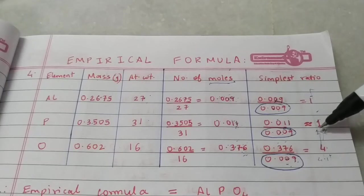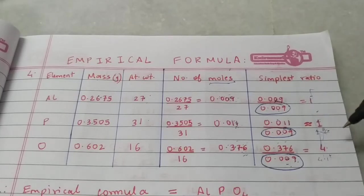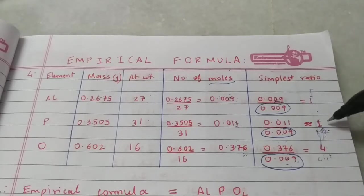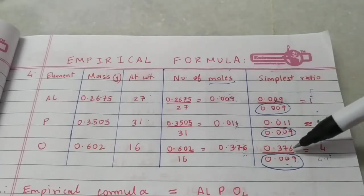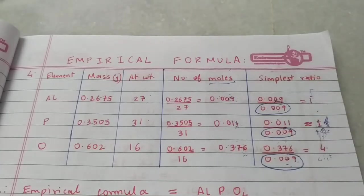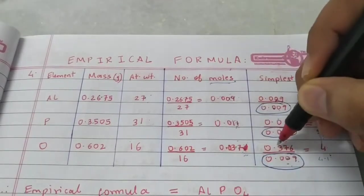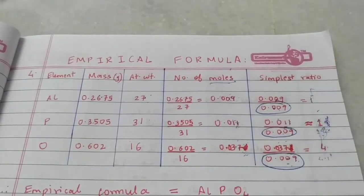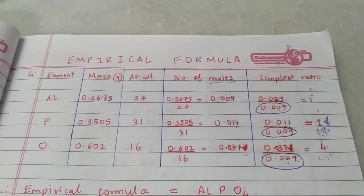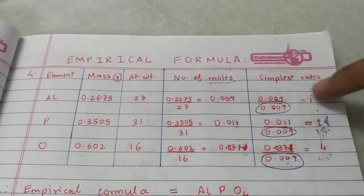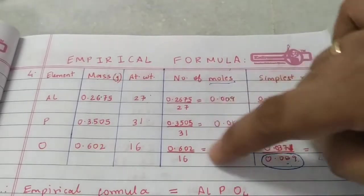If it came out as 1.7, we would round off to 2. But what if it came out as 1.5? Then we cannot round off — we keep it as 1.5 and multiply everything by 2 to clear the decimal. But in this sum it's 1.2, so we just write 1. The calculation is pretty easy — the only challenge is the moles column. The rest of the sum is very simple.